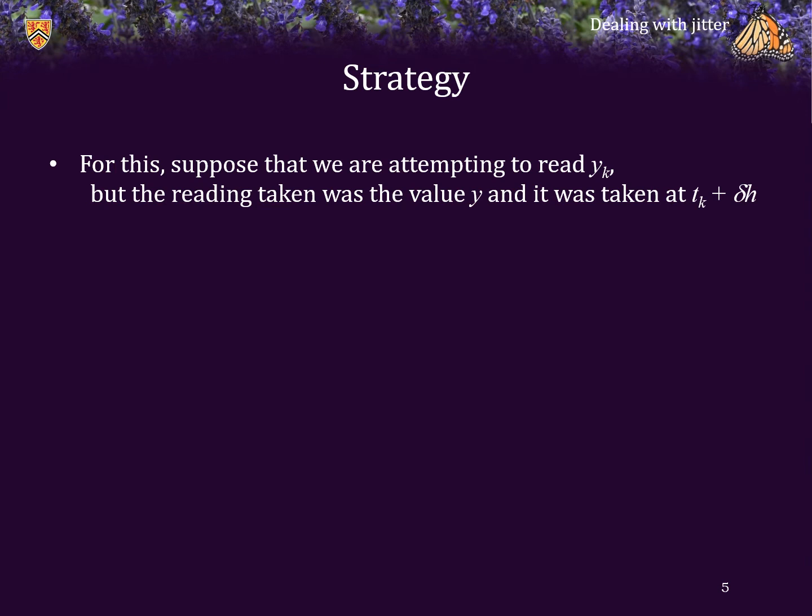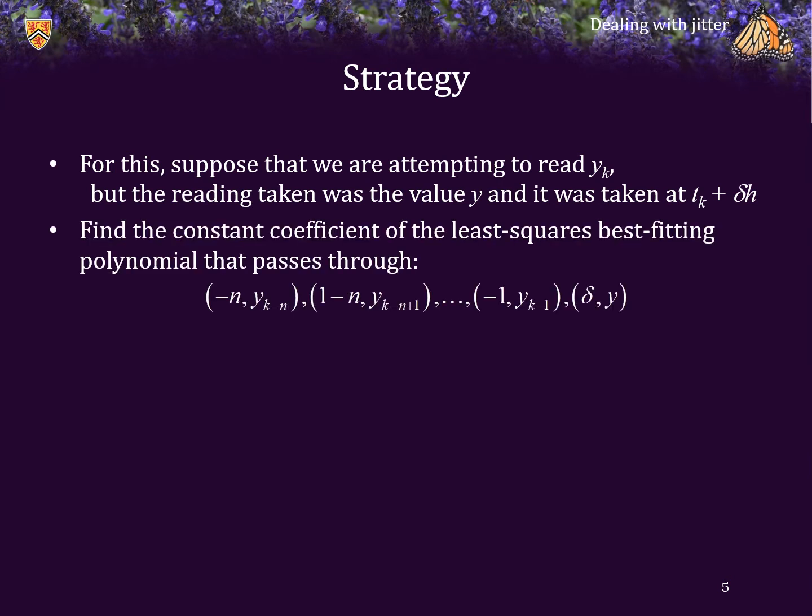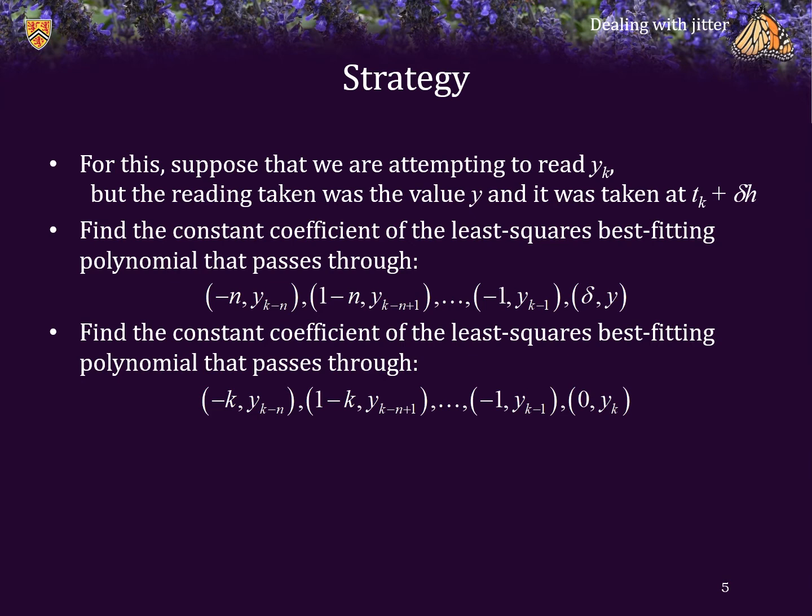So suppose we are trying to read the most recent reading y sub k, but we have a reading y and it was taken at time t k plus delta times h. What we will do is we will find the constant coefficient of the least squares best fitting polynomial that passes through these points, where all the other points are equally spaced, but the last point is at time delta with the value y. Then we will find the constant coefficient of the least squares best fitting polynomial that passes through these points where that last point is now 0 and y sub k. Remember, the constant coefficient is the least squares best fitting polynomial passing through those points values evaluated at 0 and that is our best approximation of the data at time t sub k. We're then going to equate these two coefficients and solve for the value y sub k.